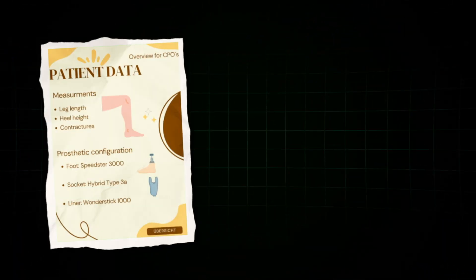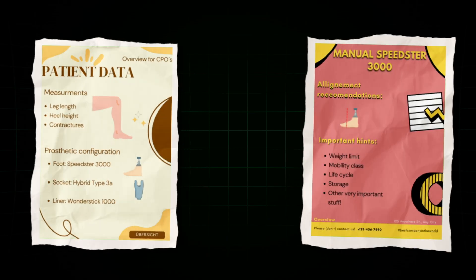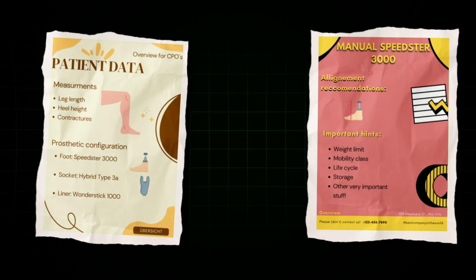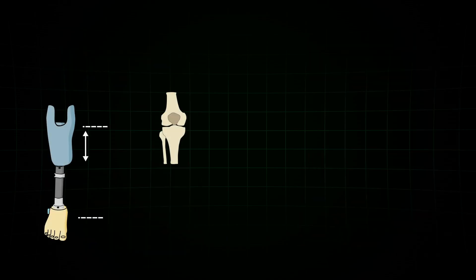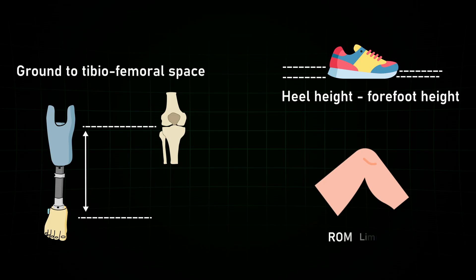Before we start, we look at the two main sources of information we have. The individual patient data you collected during the casting or scanning and the manual of the components you want to use. For the alignment, you want to gather the distance from the ground to the tibiofemoral joint space, the effective heel height of the shoe your user is wearing, test for contractures specifically at the knee and take optional pictures of the stump.